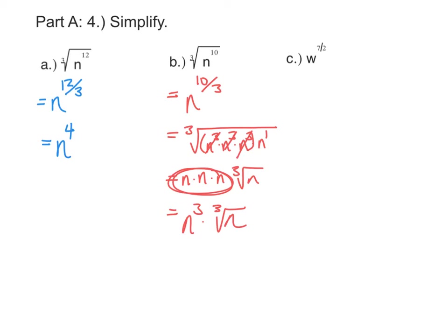In part c, we have w to the seven halves. We can turn that into a radical in a similar way — if we wanted to go with the square root of w to the seventh and then take out groups of two. We can take out three groups of two, and we will have one left over.